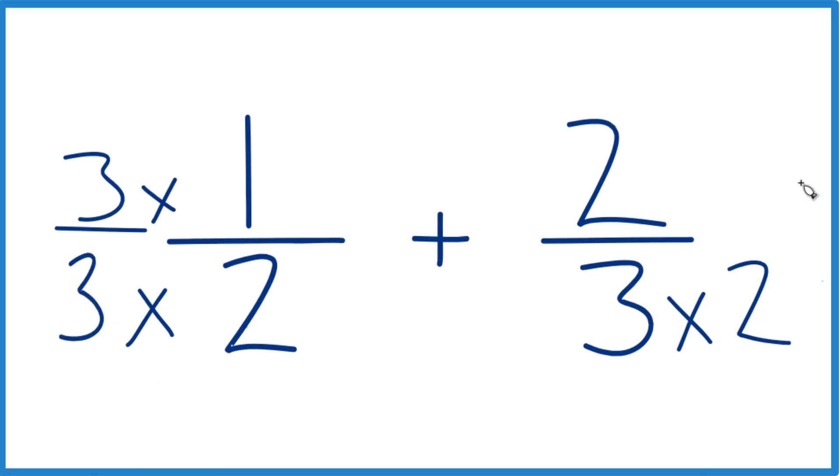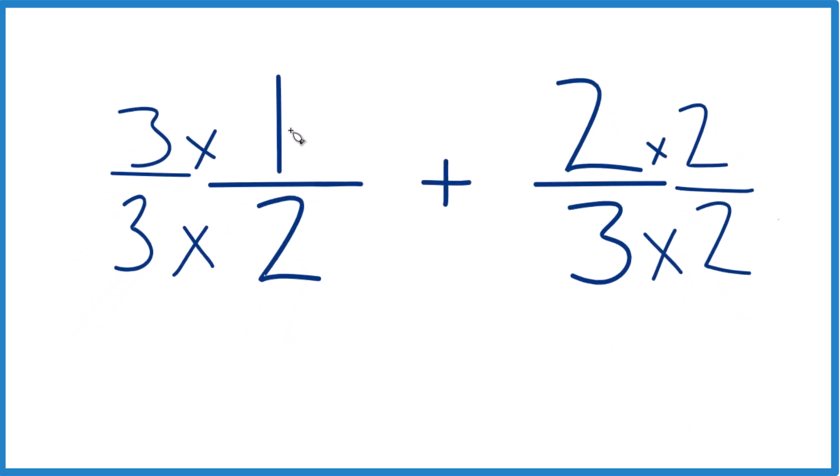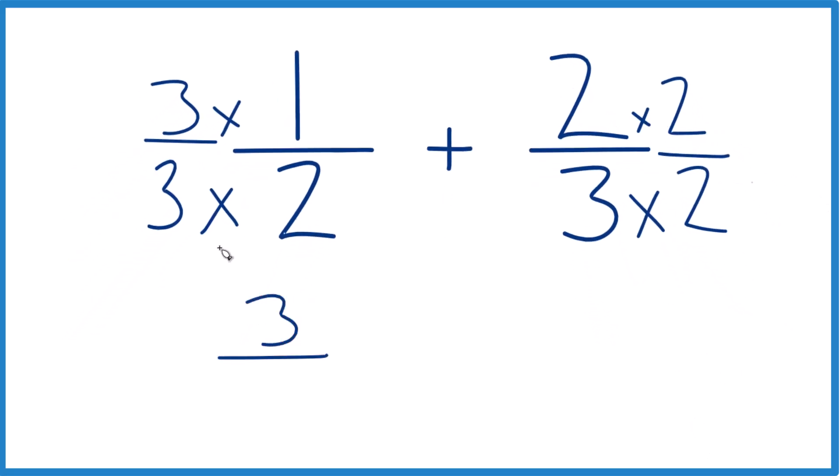Over here, we're going to put a 2 times 2, and now 3 times 1 is 3, 3 times 2 is 6, plus 2 times 2 is 4, and 3 times 2 is 6.